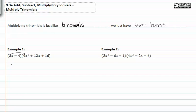So we get 3 times 9, which is 27 x to the third, and then move on to the next term. 3 times 12 is 36x², and then 3x times 16 is 48, and we have to include that x.